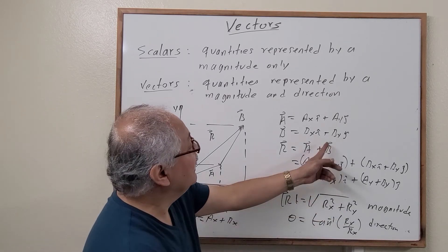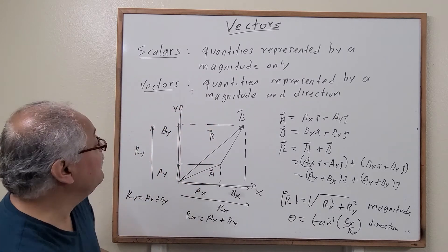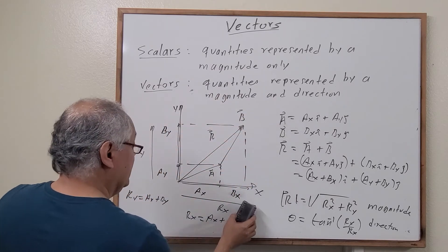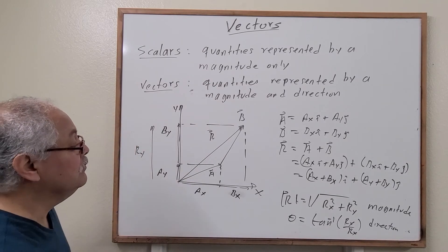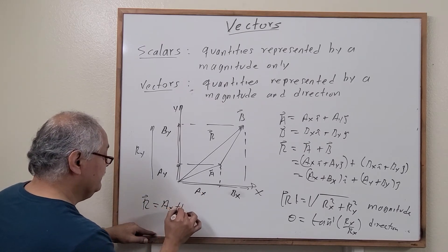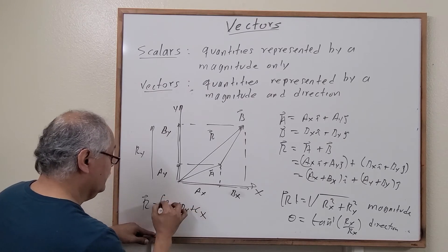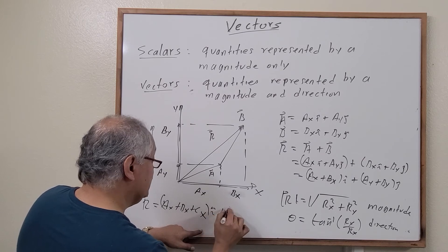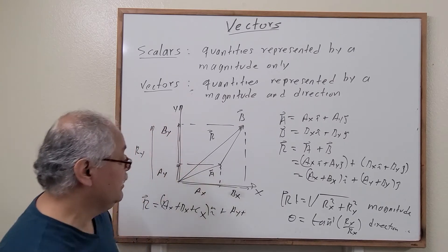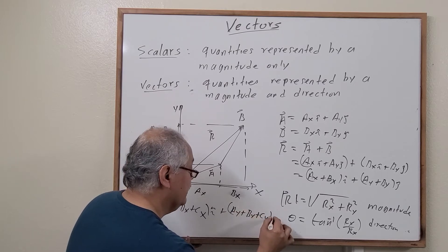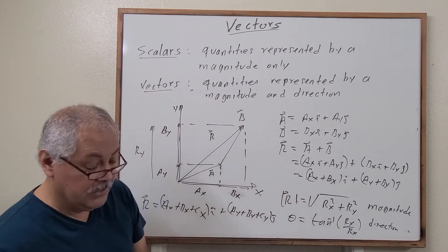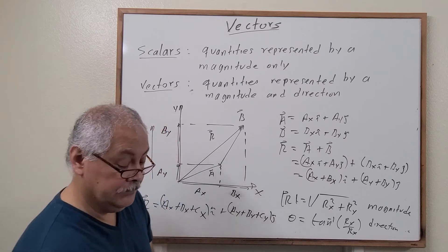The same technique applies for three vectors. If we have vectors A, B, and C, the resultant is (A_x plus B_x plus C_x) i-hat plus (A_y plus B_y plus C_y) j-hat. We calculate the magnitude and direction in the same way.